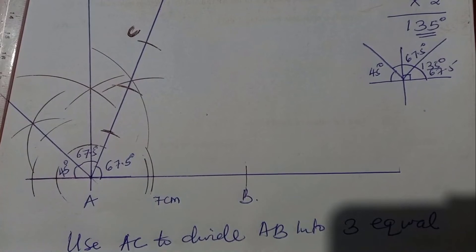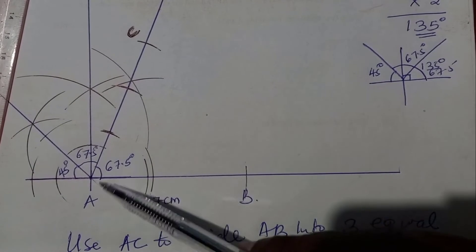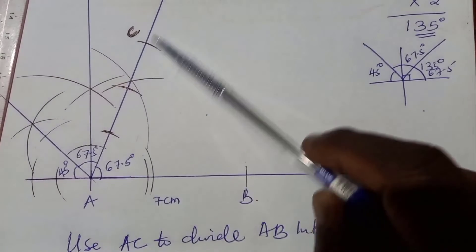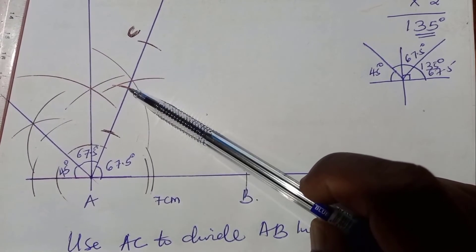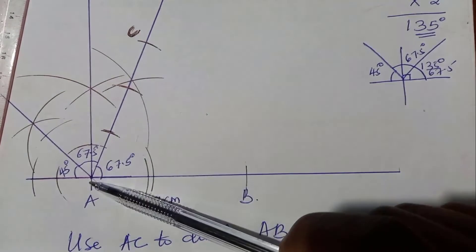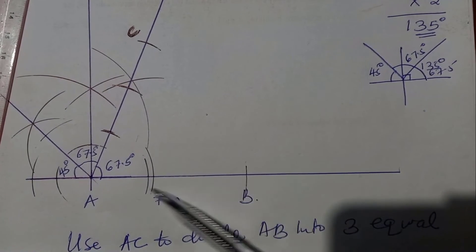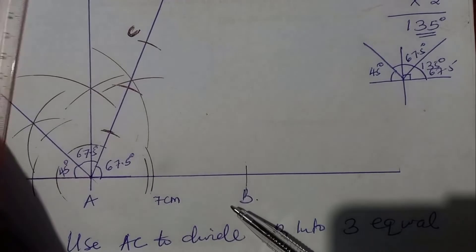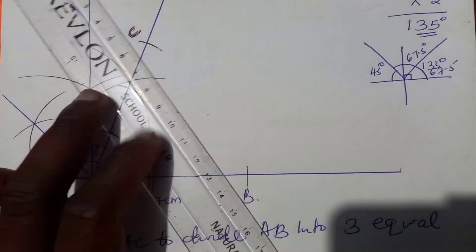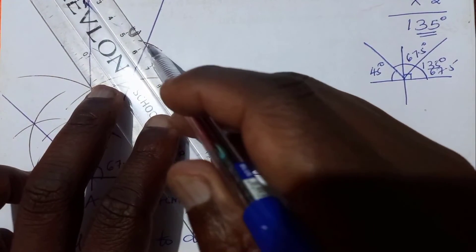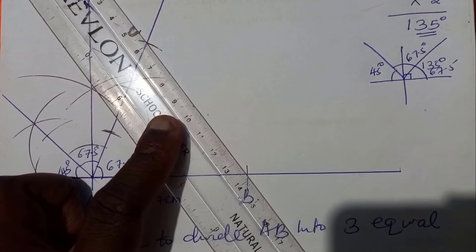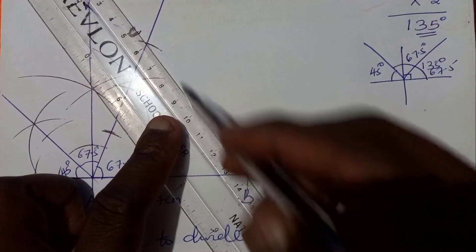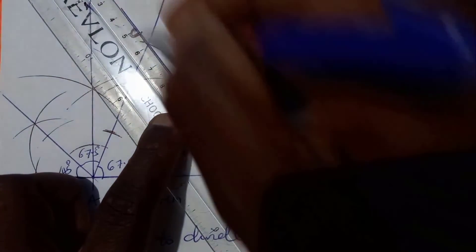After dividing that line making three equal divisions, the first one is here, the second one is here, and the third one is here. Since we want to divide AB into three equal parts, we join the last point, which is C, to B. So join that point C to B.